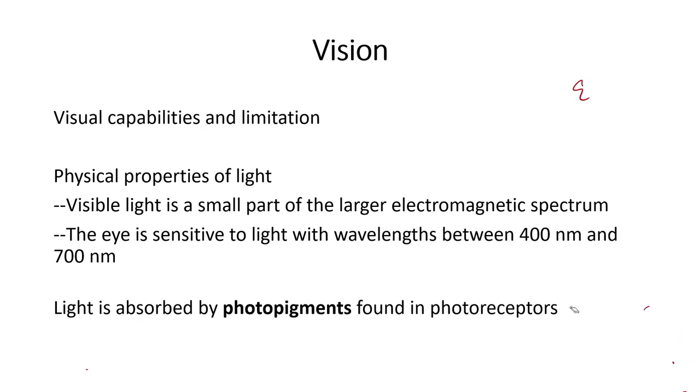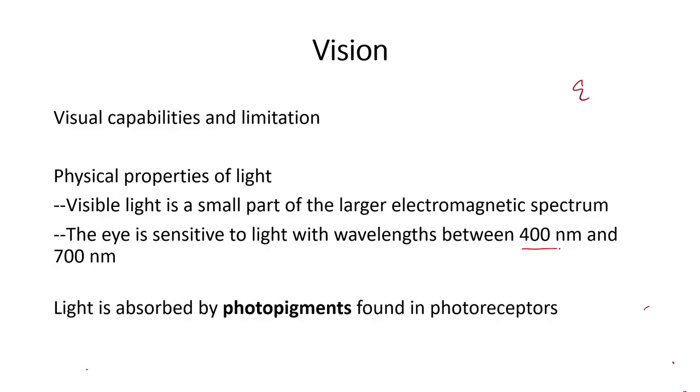Starting with the physical properties of light: all vision starts with light, and light is a broad spectrum of wavelengths. Within this broad spectrum there is something called the visible region of light in which most vision happens. The wavelength of light within which vision is possible is between 400 nanometers and 700 nanometers.